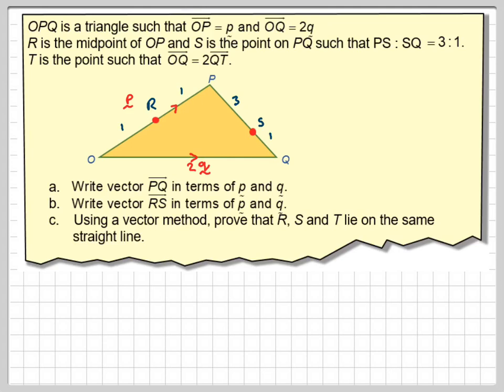T is a point such that OQ is equal to 2QT, so we need to add a point here, which is half the length of this length here. Basically, OQ is 2 times QT. So that means that that vector there is, in fact, q.